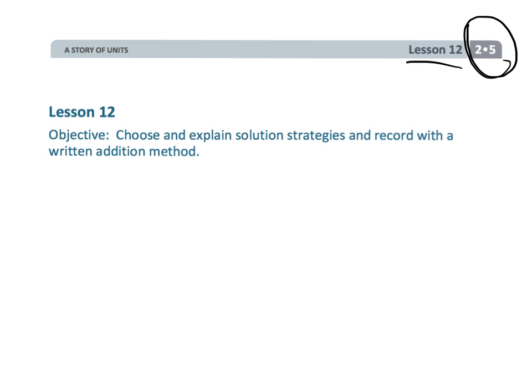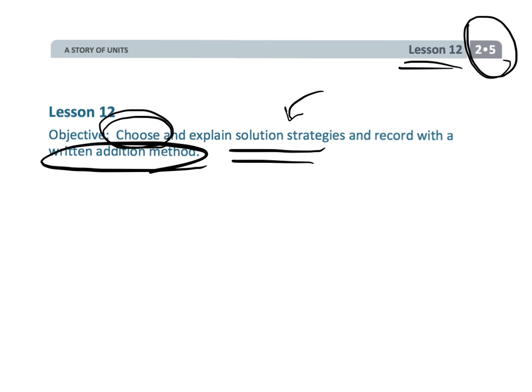All right, this is second grade module 5 lesson 12, where students are going to still be using a variety of methods. Instead of just the arrow method or the decomposition method or the standard algorithm, now students are going to get to choose whatever strategy they want to use and then explain how they did it. The idea being, we want students to look at the problem and then think about the numbers in that problem and then choose a solution method that really seems to make sense for those sets of numbers.